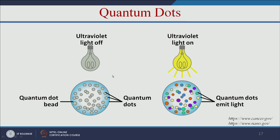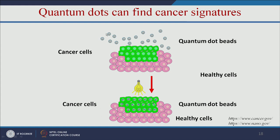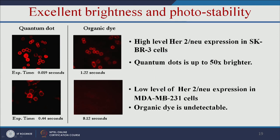Quantum dots are not fluorescent by themselves; when you apply UV light, they emit light. The quantum dots are attached with antibodies that specifically bind to cancer cells. When quantum dots bind to the cancer cells and you apply the light, only the cancer cells will emit fluorescence — healthy cells show no fluorescence — so we can easily diagnose the cancer cell.